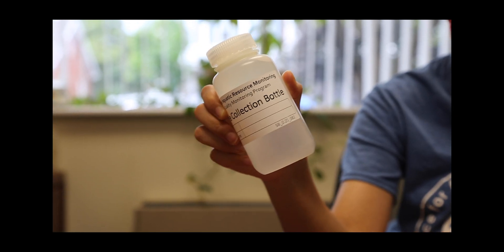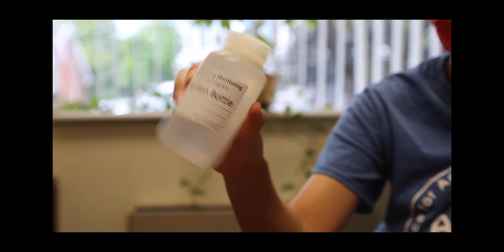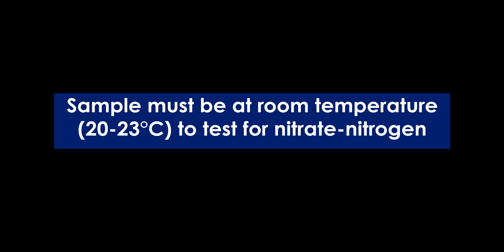To begin your nitrate-nitrogen test, invert the sample water three times to make sure the sample is mixed. It is important to note that your water sample must be at room temperature prior to testing it for nitrate-nitrogen. This is between the temperatures 20 to 23 degrees Celsius.